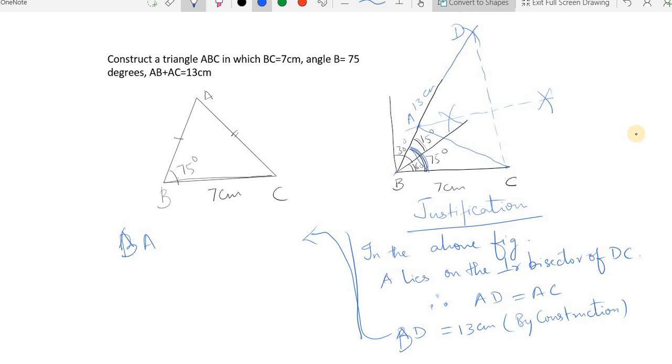Now I could split this and write it as BA plus AD equals 13 centimeters. So BA plus AD is 13 centimeters, but I know that AD equals AC. So I can write it as BA plus AC equals 13 centimeters, or AB plus AC equals 13 centimeters, and justified.